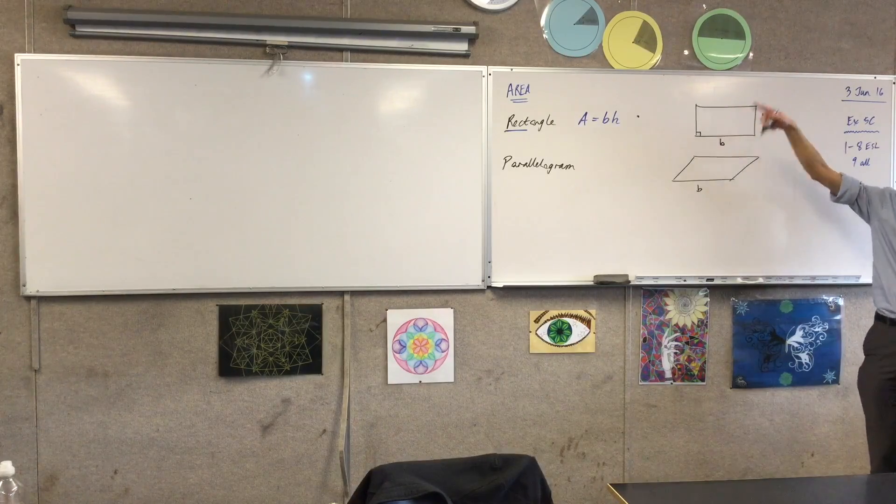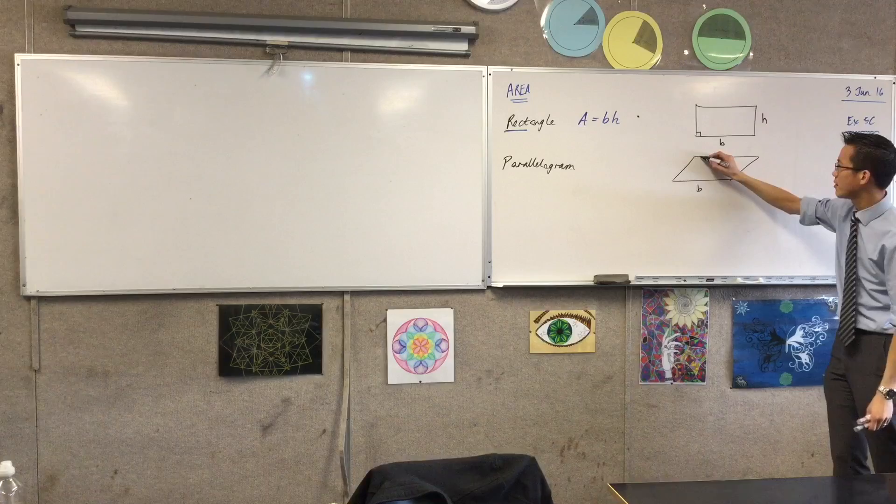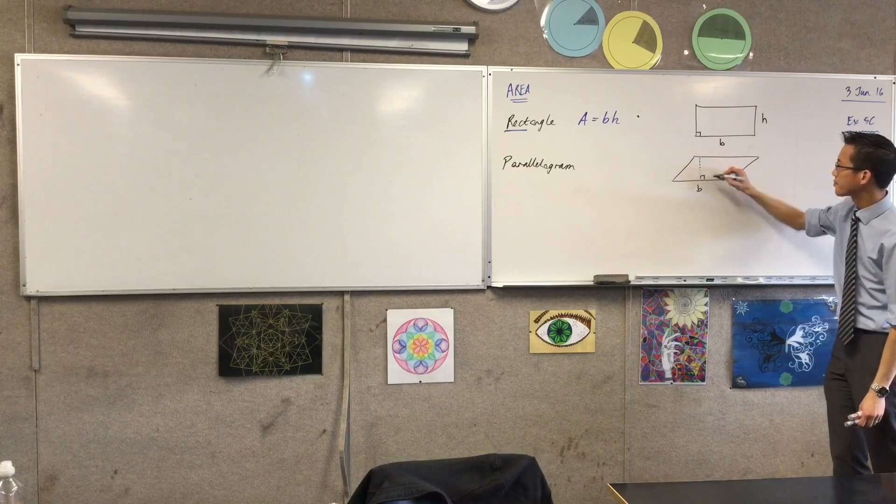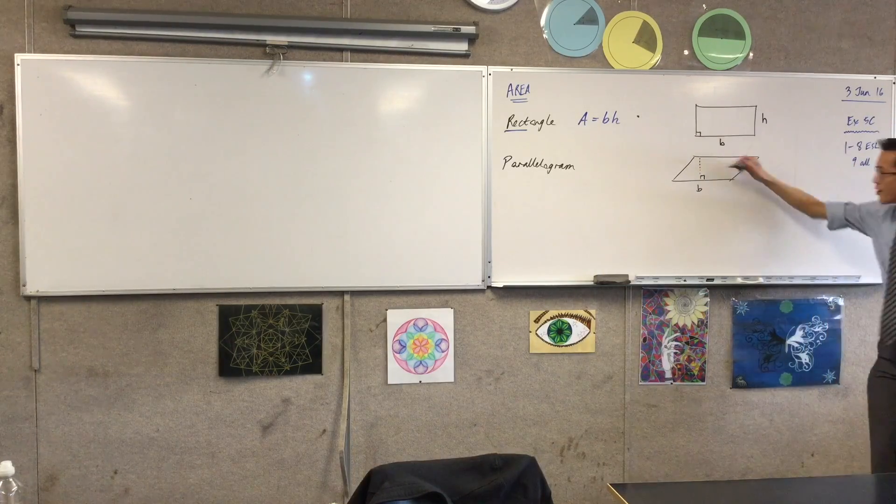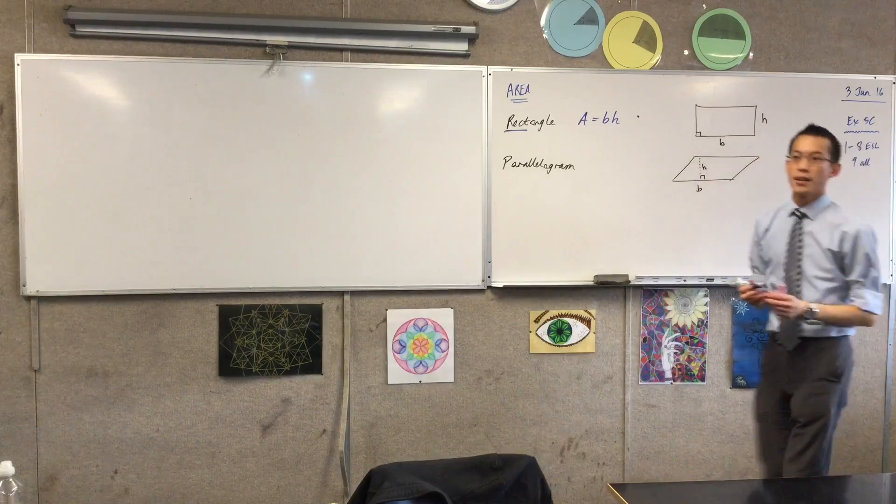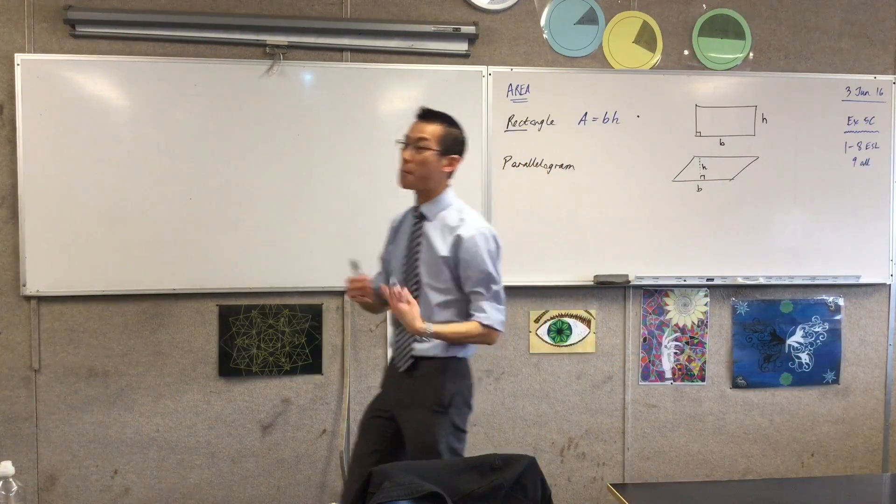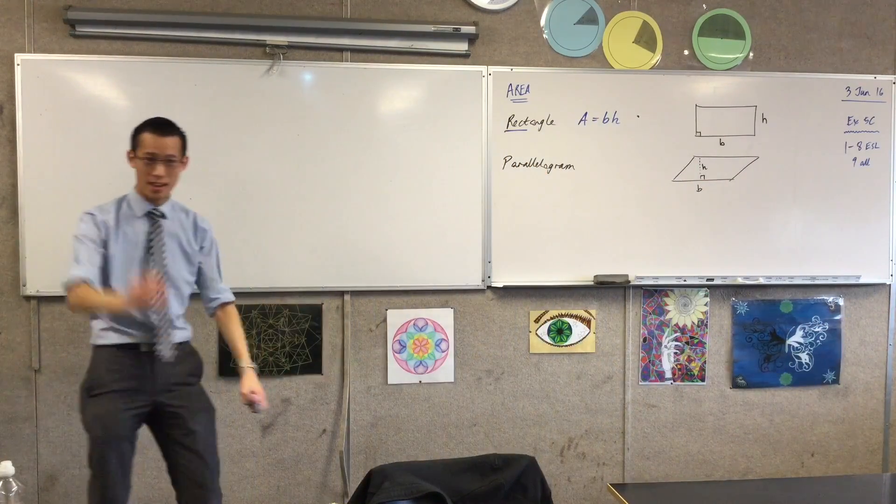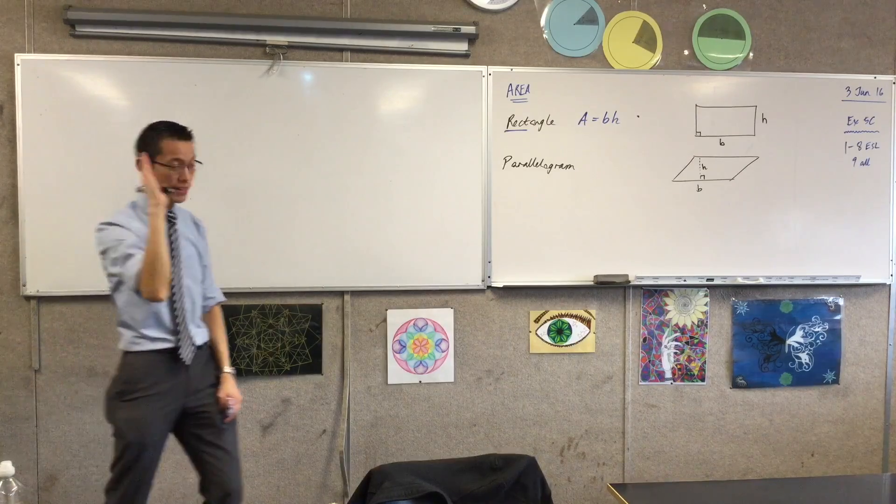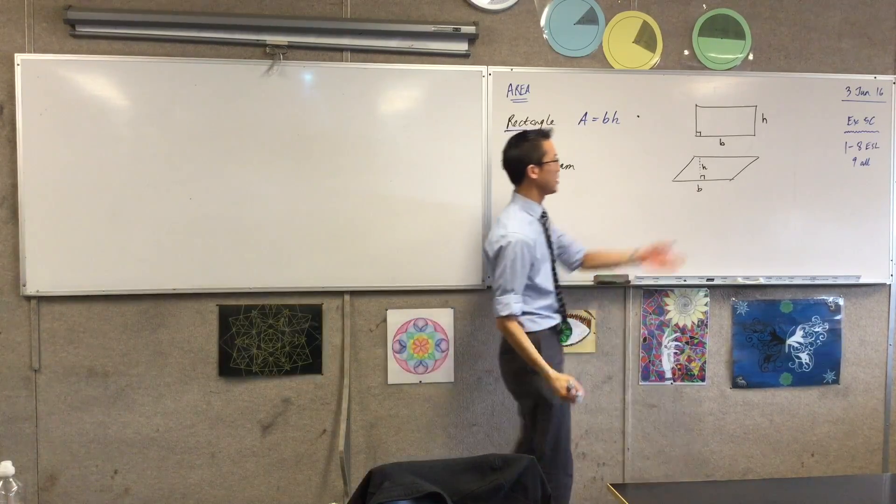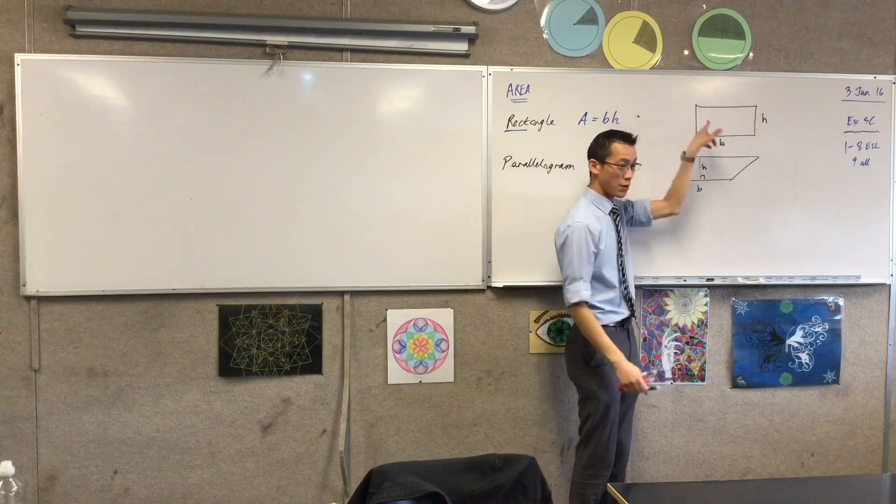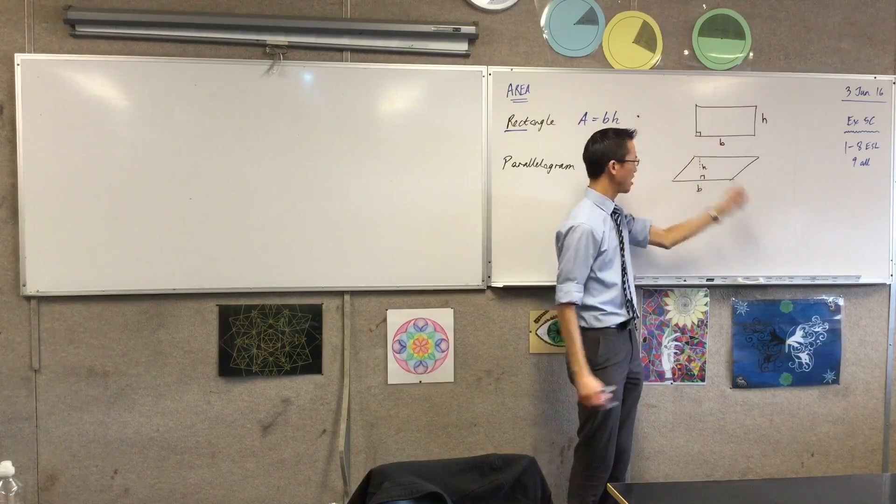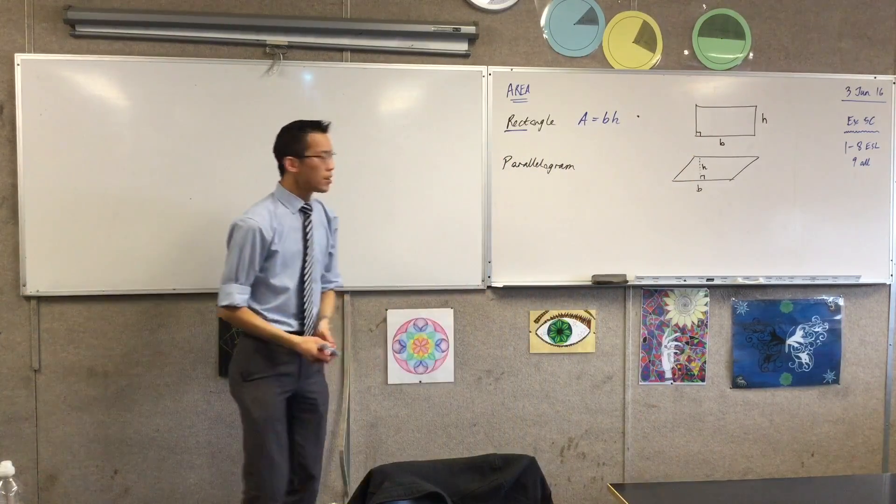Instead of just one of the sides, you actually need to add in a perpendicular line. So, this height here, it's actually an abbreviation for the perpendicular height. It's measured at a right angle, that's how tall the thing is. It's just convenient that because a rectangle has right angles everywhere, the height's just on the edge. But in a parallelogram, not the case.